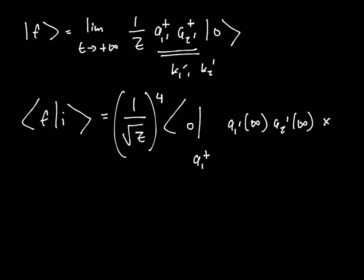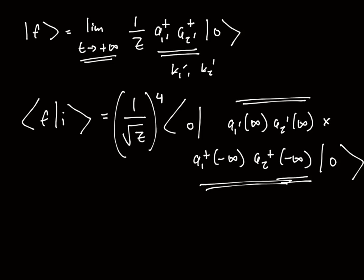Times a₁ dagger minus infinity, a₂ dagger minus infinity, acting on the vacuum. These arguments denote the time - the value of t at which we are evaluating these operators. Finally, let me point out that everything here is time ordered already. These guys are to the past of these guys. Therefore I can stick a time ordering symbol in here with no problem because it's already time ordered. This turns out to be a very useful trick for what happens.